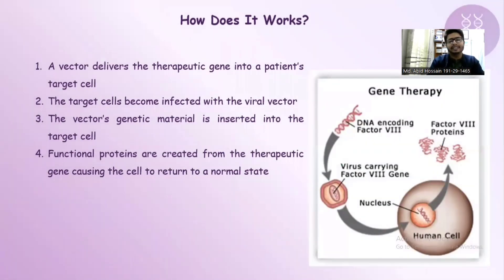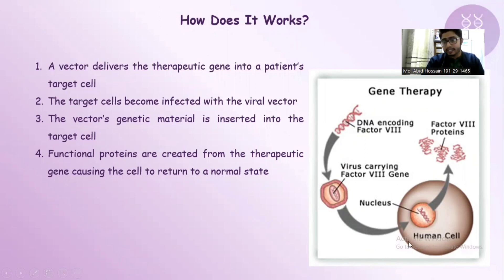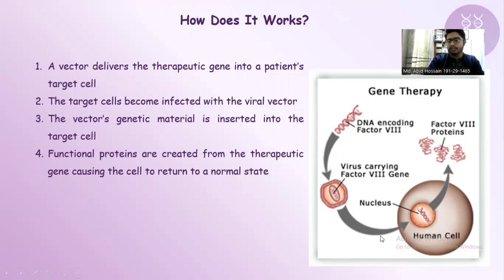How does gene therapy work? A vector delivers the therapeutic gene into a patient's target cell. The target cell becomes infected with the viral vector, and the vector's genetic material is inserted into the target cell. Functional proteins are then created from the therapeutic gene, causing the cell to return to a normal state.